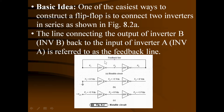To store binary 1: disconnect the feedback line and give V1 = +5V (VCC). Inverter A output = 0V, inverter B output V3 = +5V. Now reconnect the feedback line and disconnect VCC — the +5V output holds the input of inverter A at +5V DC, maintaining the output at +5V. This stores binary 1. This is how the basic flip-flop is prepared from two inverters connected in series with a feedback line.